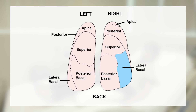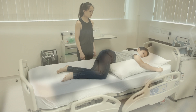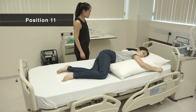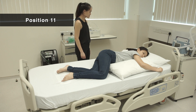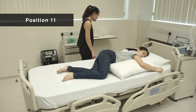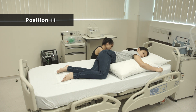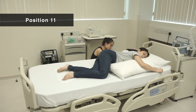Position 11 is for the lower back portion of the right lungs. Lie on the left side with knees bent. Place a pillow under the chest. Rotate the body slightly forwards. Elevate the foot of the bed 20 degrees.